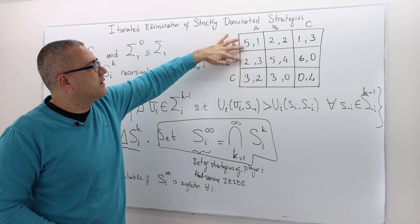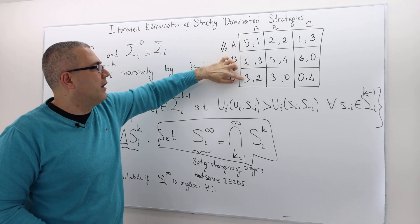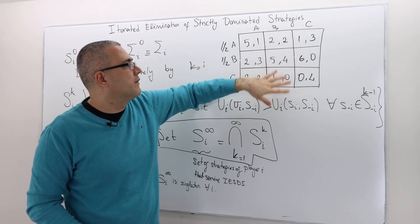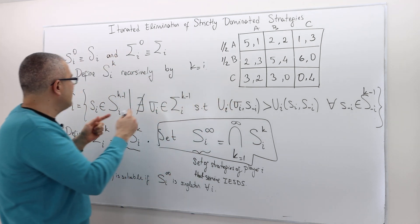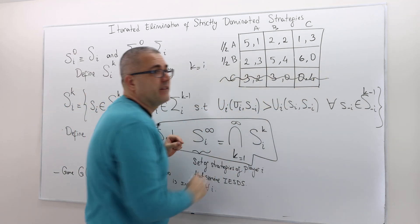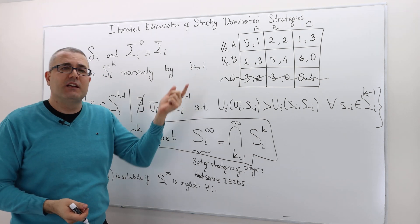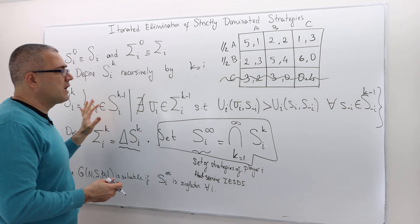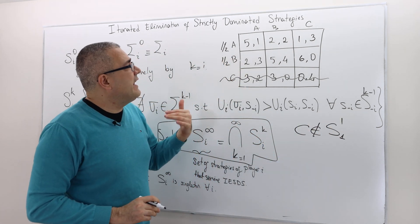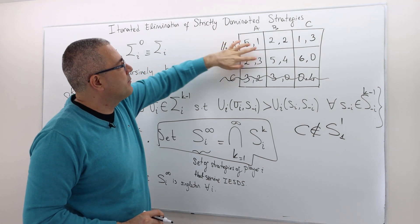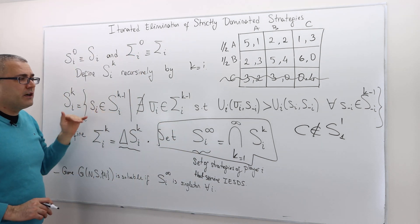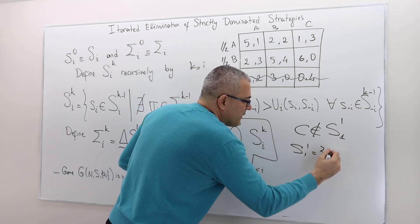So C is eliminated in the first step — there exists a mixed strategy that strictly dominates C. Is there any domination between A and B? A is better sometimes and B is better other times, so there's no strict domination between A and B. Looking only at pure strategies, S_1^1 is just {A, B}.